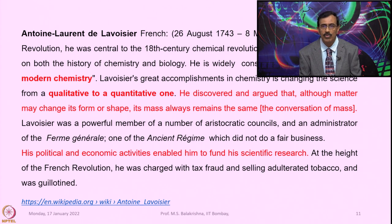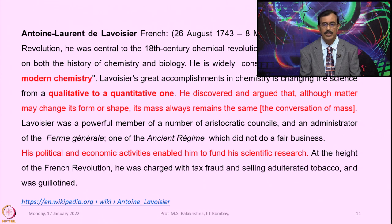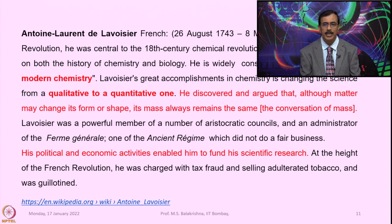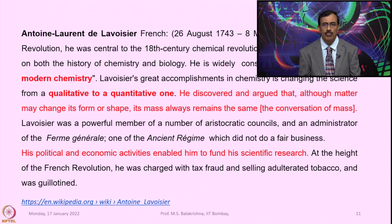Lavoisier was a powerful member of a number of aristocratic councils in France and an administrator of the Ferme Générale, one of the ancien régime institutions that did not conduct business fairly. His political and economic activities enabled him to fund his scientific research. At the height of the French Revolution, he was charged with tax fraud and selling adulterated tobacco, and unfortunately he was guillotined in 1794.